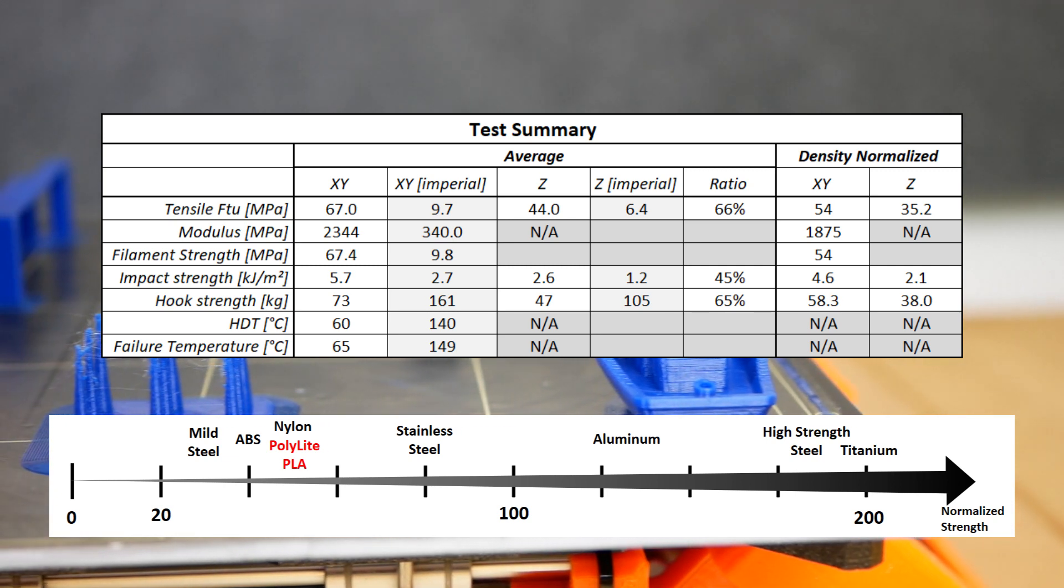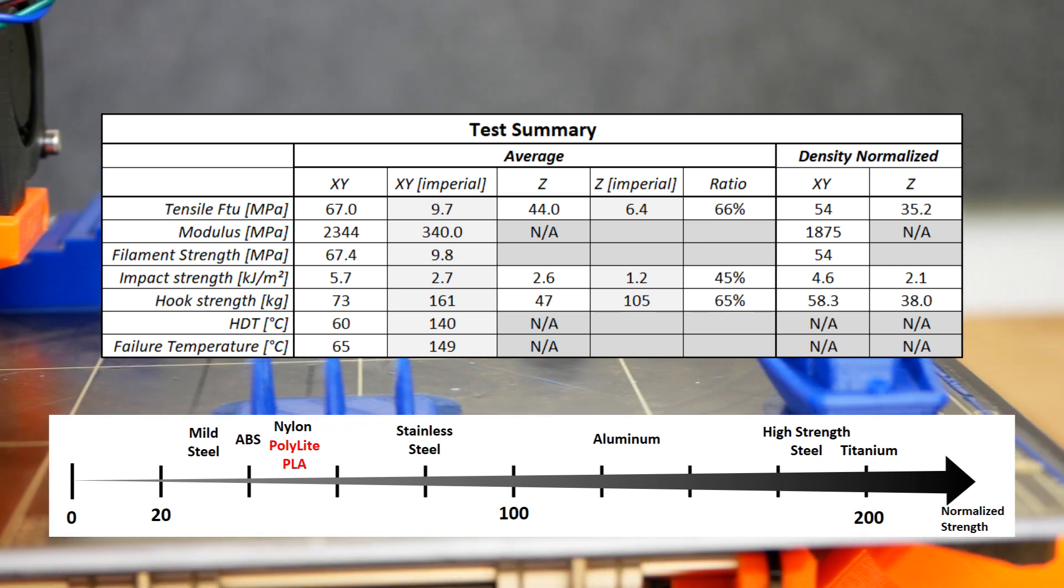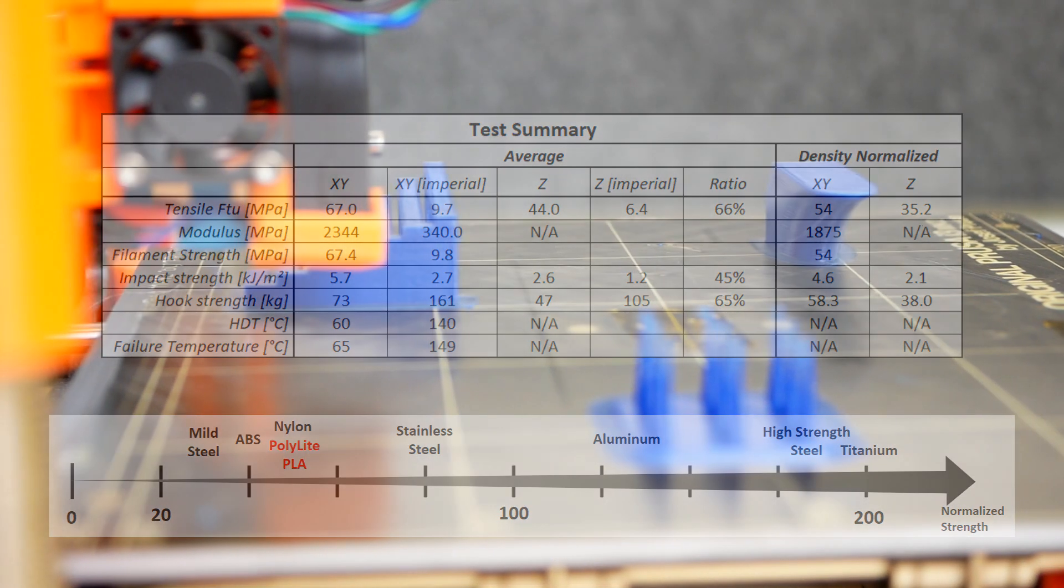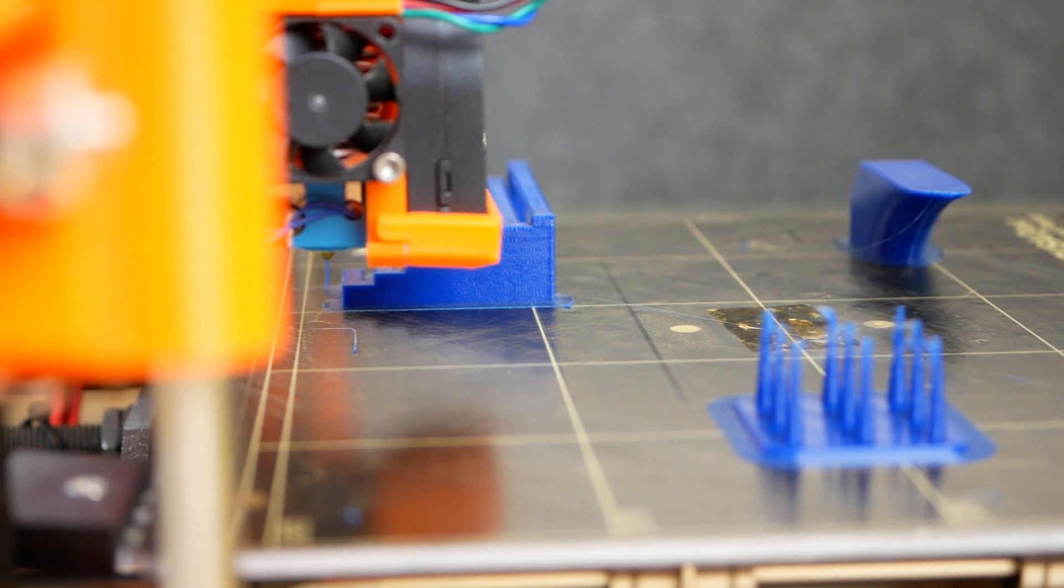When comparing material properties, it's interesting to take a look at the normalized values because they tell you how much strength you get per weight of your material, which is especially important for lightweight designs.